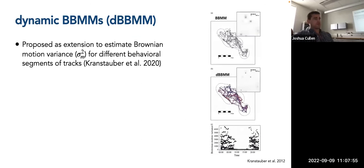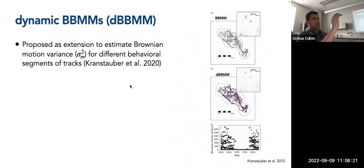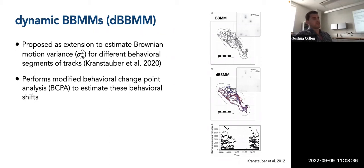An extension of the originally proposed BBMM is the Dynamic Brownian Bridge Movement Model, or DBBMM, proposed to estimate the Brownian motion variance for different behavioral segments of tracks. This model considers segmenting a track into different behavioral periods of homogeneous behavior and assigning a different Brownian motion variance value to each segment. This segmentation is performed using the behavioral change point analysis originally proposed by Garari and colleagues, with a slight modification, to identify breakpoints in time that separate these tracks and estimate different Brownian motion variance values characterizing them.